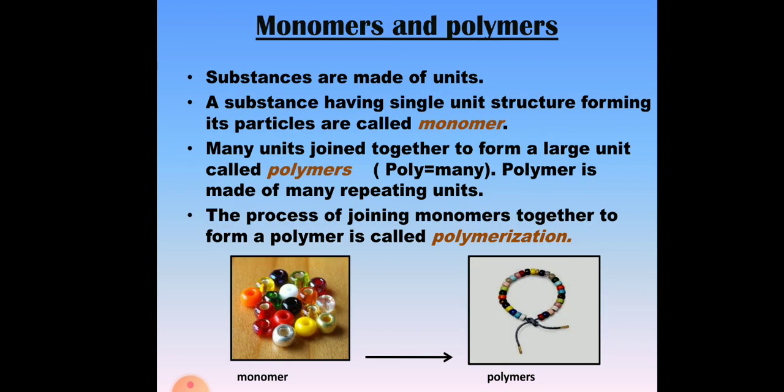Monomers and polymers: substances are made of units. A substance having a single unit structure forming its particles is called a monomer. Many units joined together to form a large unit are called polymers.